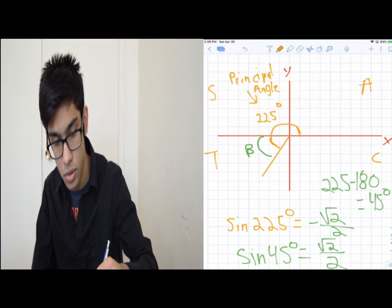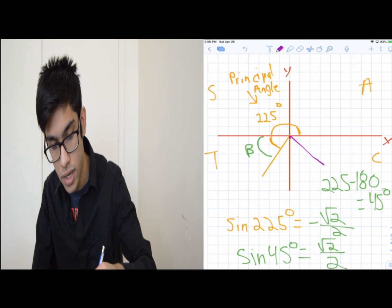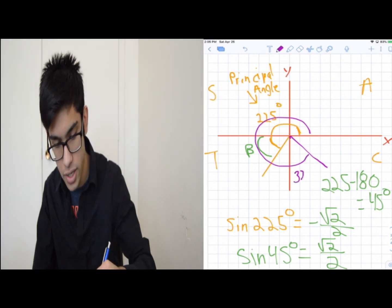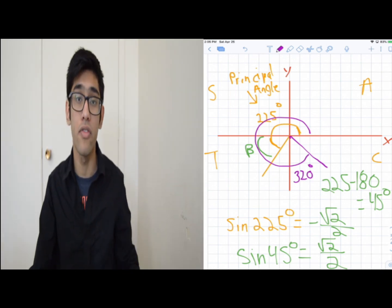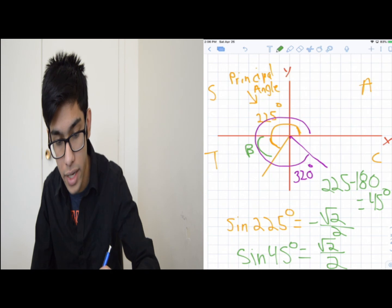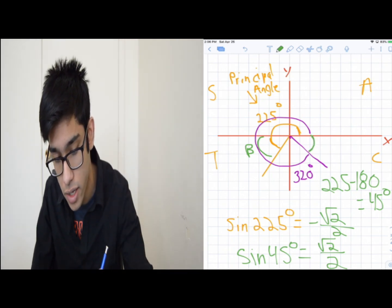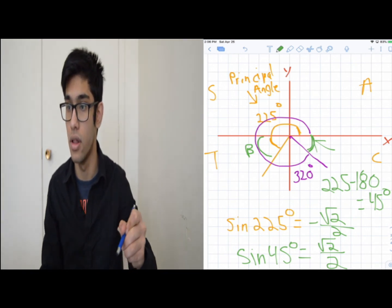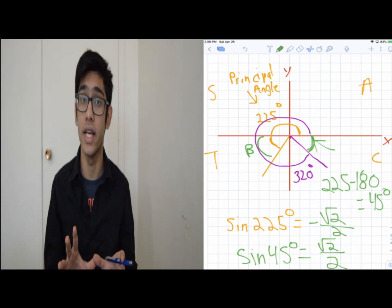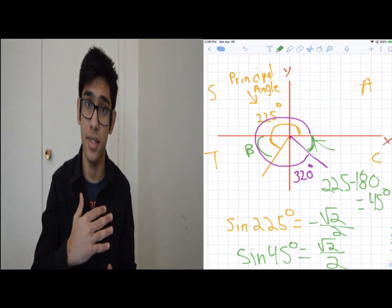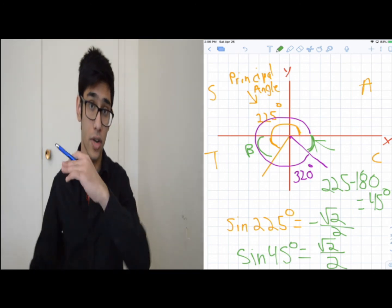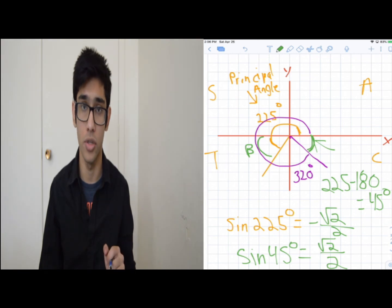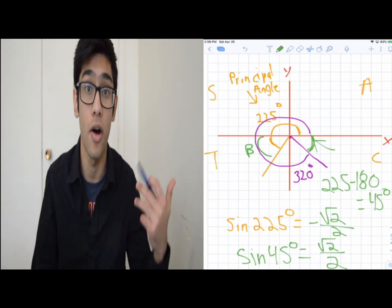Let's say you had an angle of 320 degrees. I can find the related acute angle by starting from the x-axis. Since a full circle is 360 degrees, I do 360 minus 320, giving me 40 degrees as my related acute angle. Remember: a straight line is 180, a straight line plus 90 is 270, and a full circle is 360.